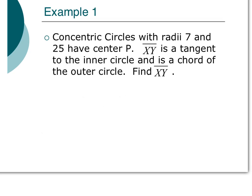Here we have a couple concentric circles. Remember, that's the bullseye-looking thing where the radius is 7 and 25, and they have a center at P. If XY is tangent to the inner circle and it's a chord to the outer circle, we want to find XY. So I'm going to first draw a couple concentric circles. I know that I have a tangent XY to the inner circle, and it's a chord to the outer circle.